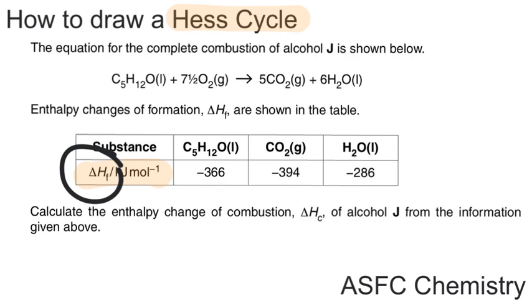This question is asking us to calculate the enthalpy change of combustion for an alcohol that was referred to as alcohol J, which is C5H12O. We don't know the full structure but that doesn't really matter. We've got an equation which is an enthalpy of combustion equation for that unknown structure, alcohol J. We can tell it's an enthalpy of combustion equation because we've got one mole of the alcohol J being reacted and we've got complete combustion products on this side which demonstrate that it was in excess oxygen and everything is in its standard state.